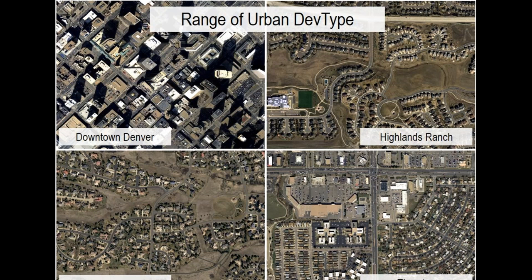It might also help to see the range of urban dev type with some examples. Under this classification system, a very wide variety of areas are urban. This includes areas that most would consider suburban, which does not have a separate category in the dev type system. So while many might see downtown Denver as urban, this also includes areas in our region that are quite suburban in nature.